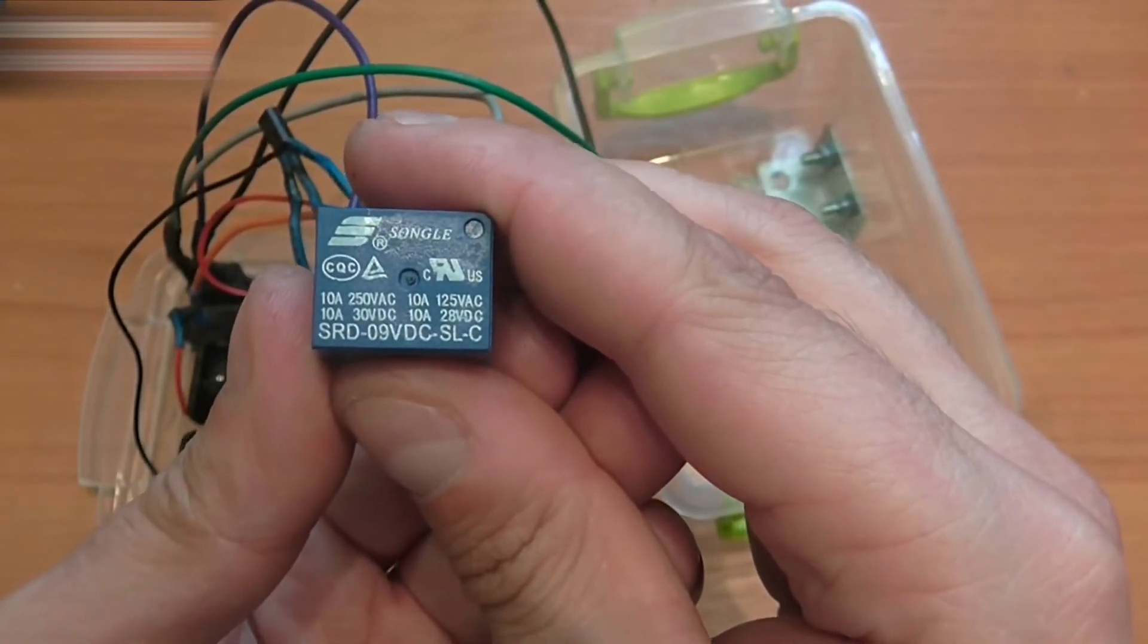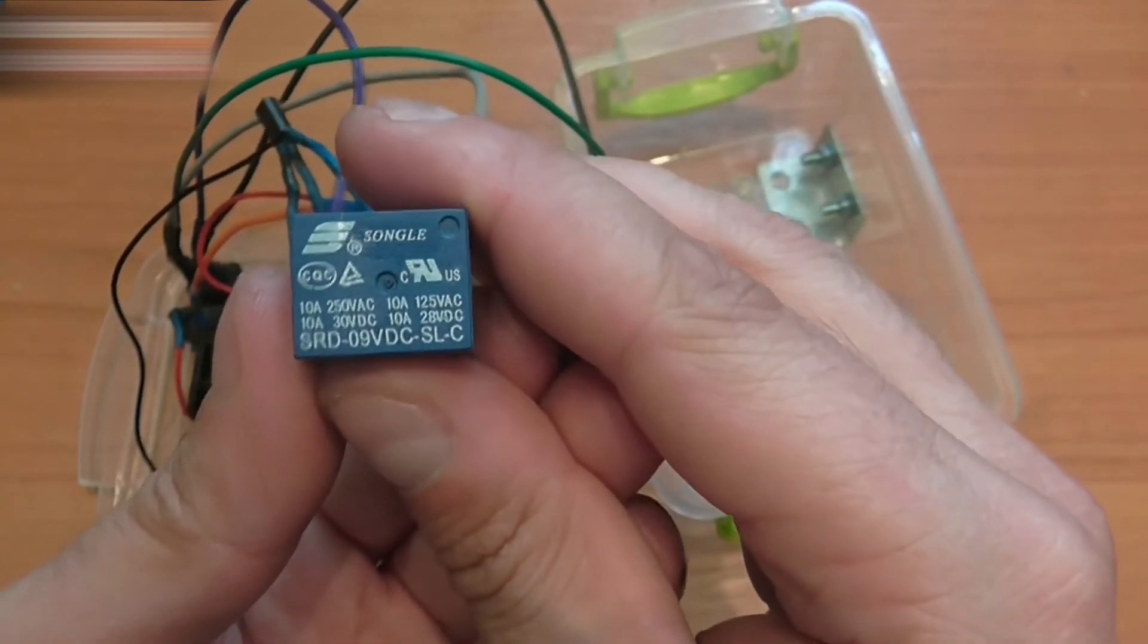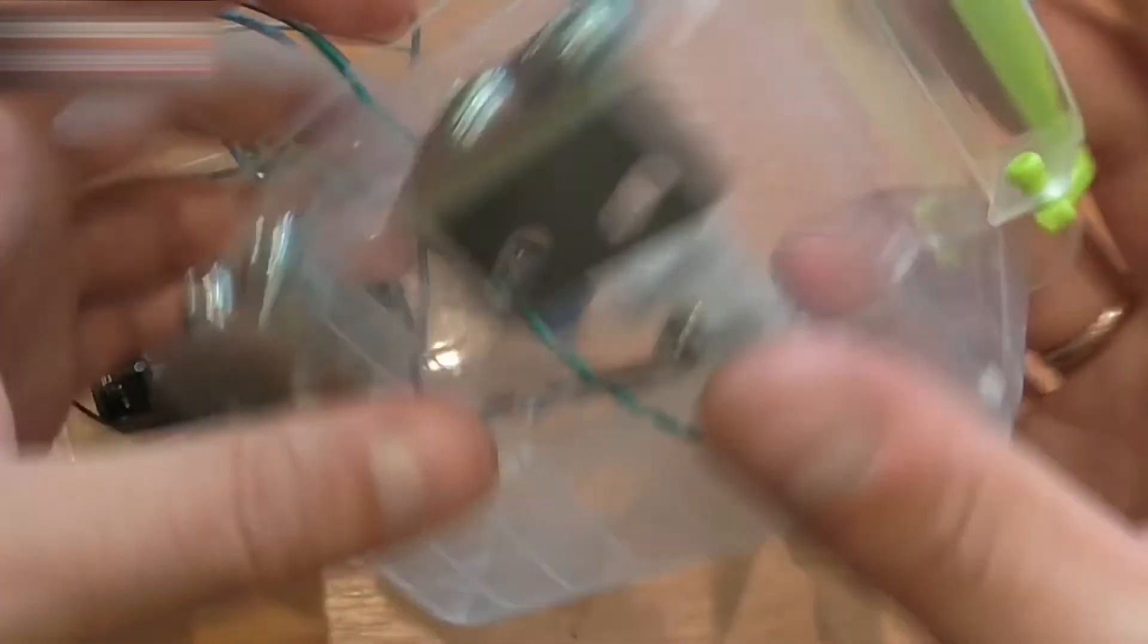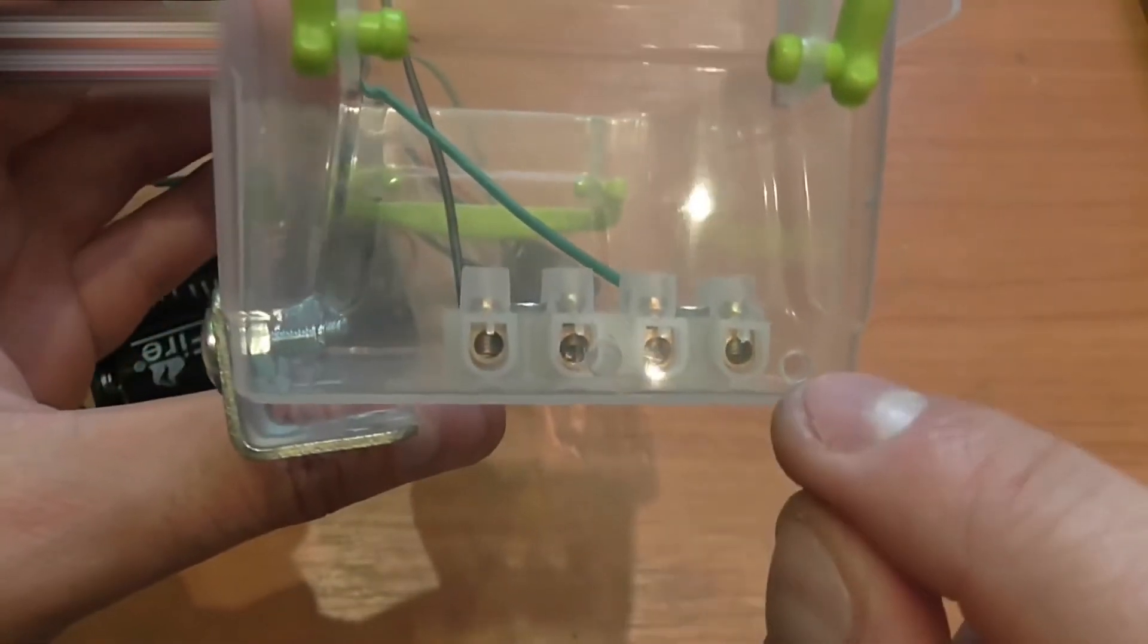The relay indicates that it can operate with up to 10A. That's enough for a light bulb. Fasten the metal corners like this and make holes for the external wires here.